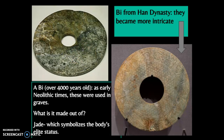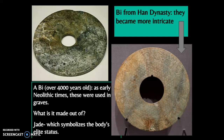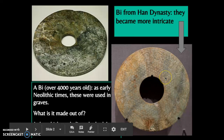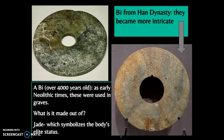The bi — these jade discs — even as early as Neolithic times, before civilization began, archaeologists found these discs on bodies in graves. This practice would carry on even through the Han Dynasty as they become more intricate, and we'll start to see jade become a symbol of the elite in Chinese society.